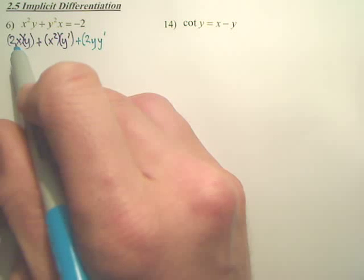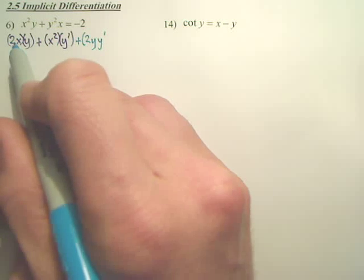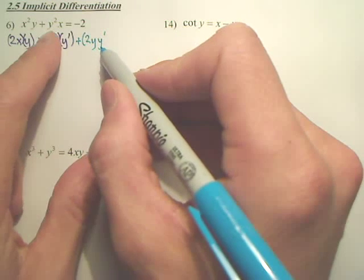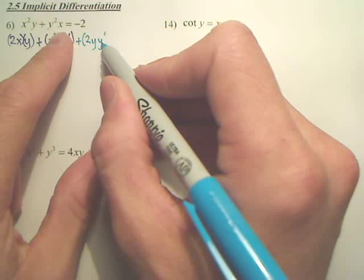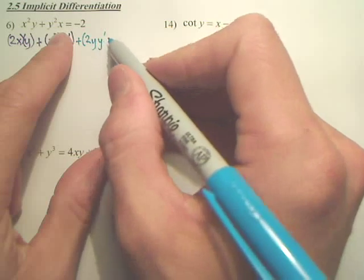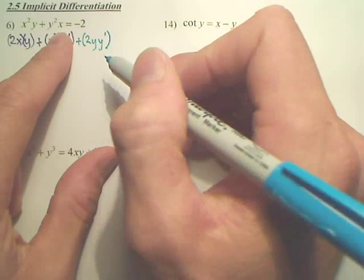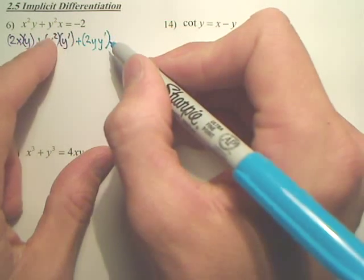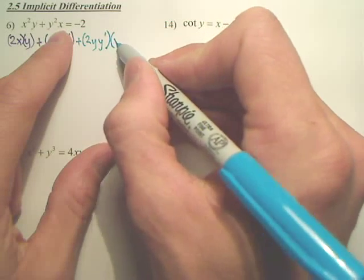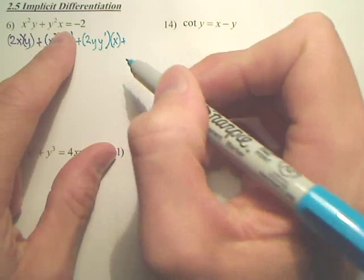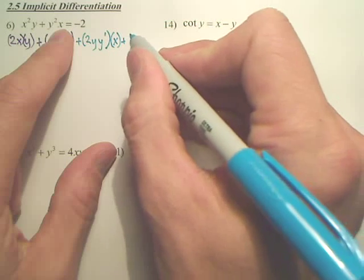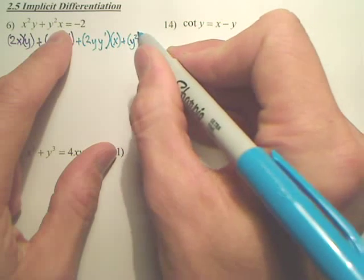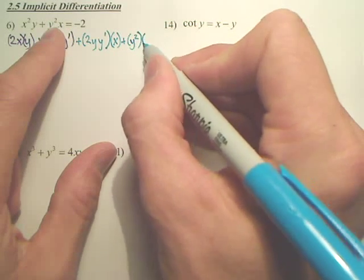The reason you didn't put x prime over here is because x prime is 1. So that would be 2y y prime. A lot of people forget that y prime. It's very commonly lost. Leave the x plus, leave the y squared, derive x, which is 1.